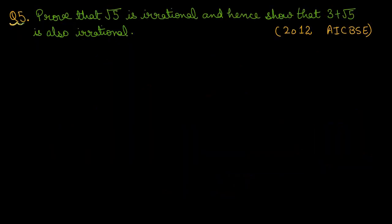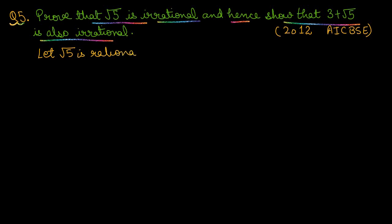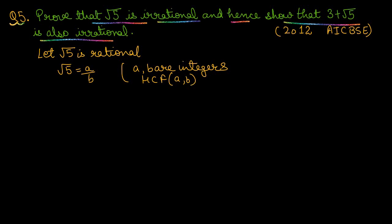Question number five: Prove that √5 is irrational, and hence show that 3 + √5 is also irrational. We begin by assuming the opposite — let √5 be rational, which means it can be expressed as a/b, where a and b are integers with no common factor, i.e., they are co-prime.